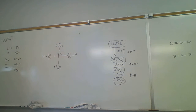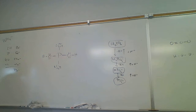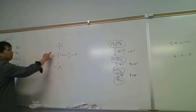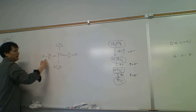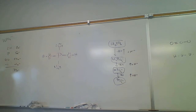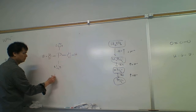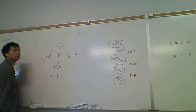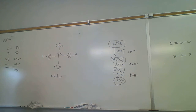After filling in the octets, we count the electrons: 2, 4, 6, 8 — eight times four is 32 electrons. That's correct. The octet looks good.